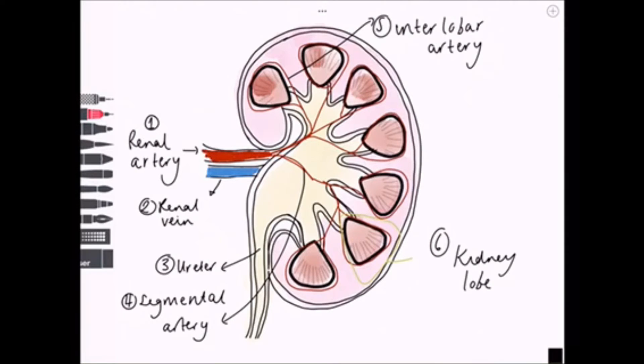Interlobar arteries arc around to produce these arcuate arteries. These run along the corticomedullary junction at the base of the medullary pyramids in the shape of an arc, hence the name arcuate artery. These arcuate arteries produce the interlobular arteries, not to be confused with interlobar arteries.